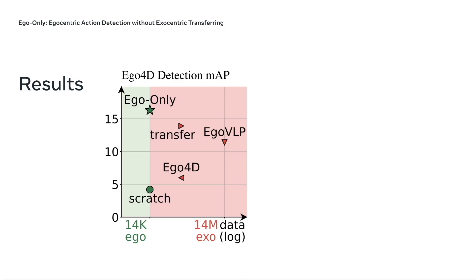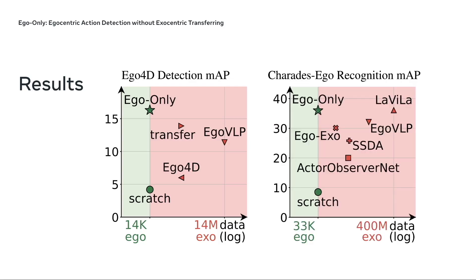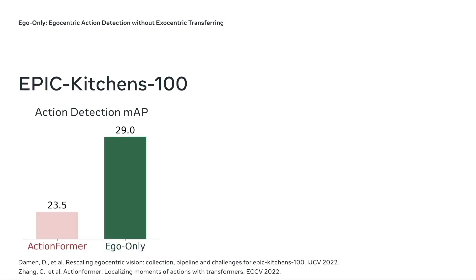Empirically, our approach yielded surprisingly good results on detection and recognition tasks. For example, on Ego4D detection, our EgoOnly model consumes only 14k egocentric labels but outperforms other transferring methods that use a thousand times more exocentric data. Similarly, on Charades EgoRecognition, EgoOnly utilizes only 33k labeled segments but matches Lavila, which was trained on massive-scale vision-language data, and EgoAxel, which was designed specifically to distill knowledge from Axel to Ego. On EpicKitchens-100 action detection benchmark, EgoOnly outperforms ActionFormer by a large margin as well.